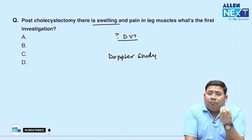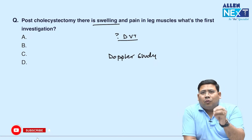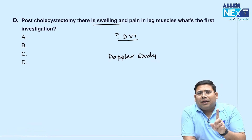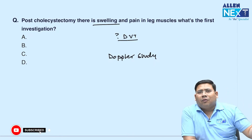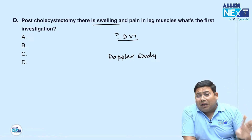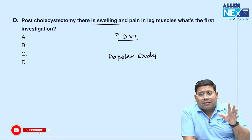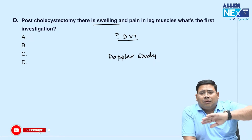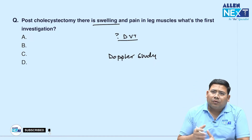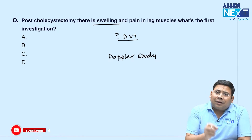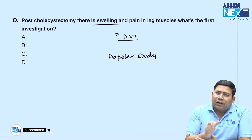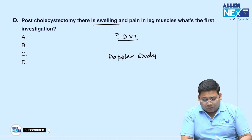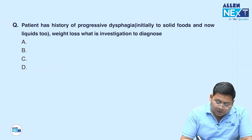There was also a question about post-cholecystectomy surgery where cancer invading the muscle was detected. The next step is radical cholecystectomy — with a two-centimeter margin of the gallbladder fossa around the liver. If radical cholecystectomy cannot achieve healthy margins, you go for extended cholecystectomy, taking out segments 4B and 5.